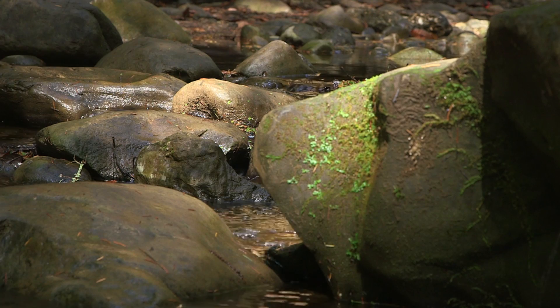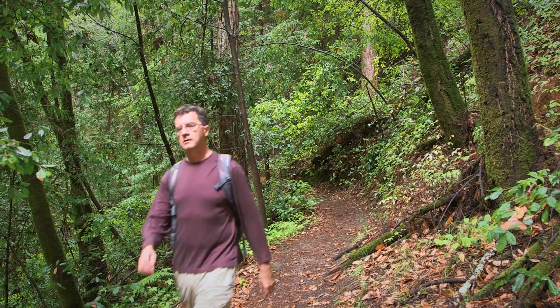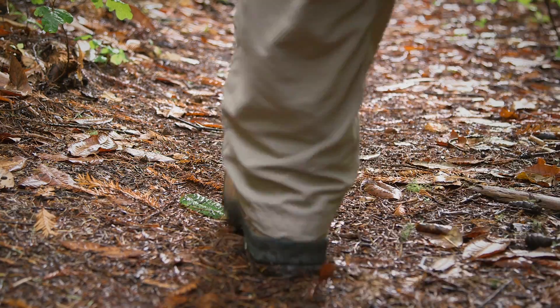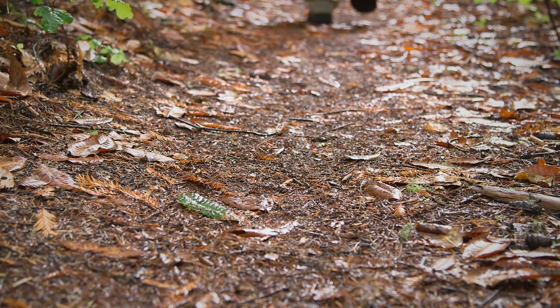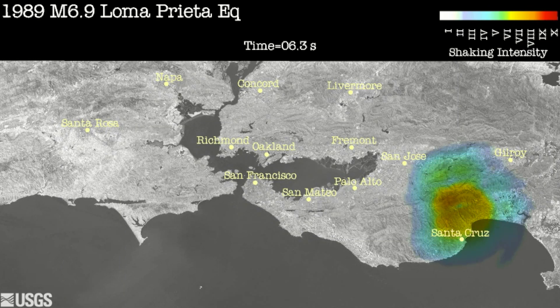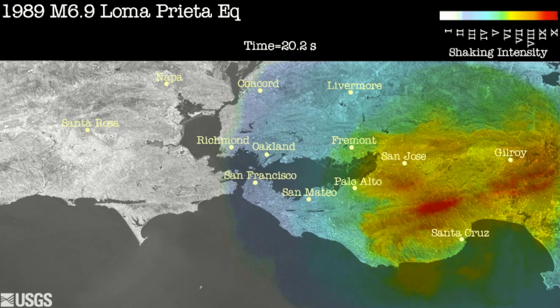During the earthquake, the fault slipped. It had a horizontal component of motion, and also a vertical component of motion. The San Andreas Fault itself, we think, has just a horizontal component of motion, so this vertical component was a little bit of a surprise. As the fault slips, it generates seismic waves. Those waves propagate out in all directions, and it's those waves that manifest as the shaking that we feel in earthquakes and that cause damage.